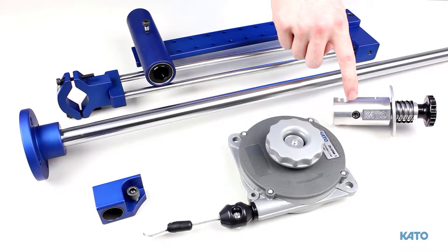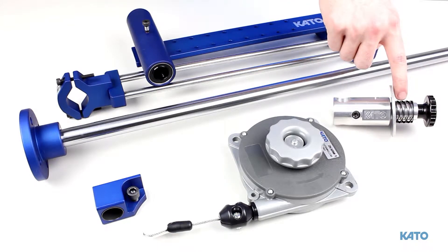This is the strip feed reel bracket. It consists of a washer, a spring, and a knob.